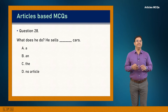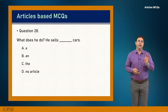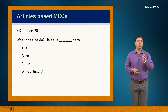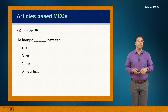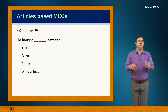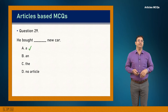Question 28: What does he do? He sells dash cars. 'Cars' is plural and refers to cars in general — no specific item. Answer is D: 'He sells cars.' Question 29: He bought dash new car. 'New' starts with a consonant sound. One car is being referred to but it's not identified, so answer is A: 'He bought a new car.'